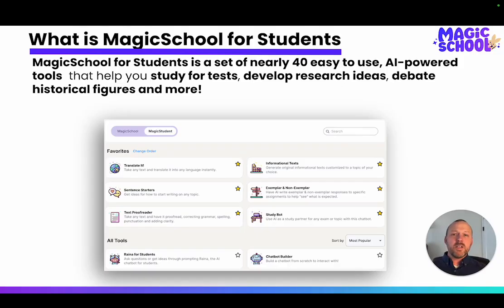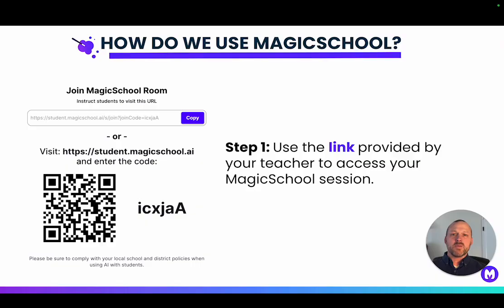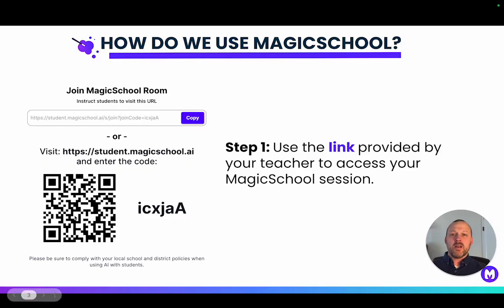When your teacher creates a Magic School room for your class, they'll give you one of three different ways to join your room. They can copy this link and send it to you, or they can ask you to go to this website and enter the join code that's right here, or they might have you scan this QR code with your device.